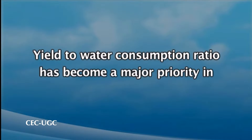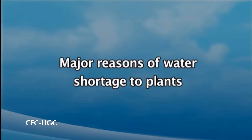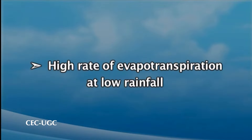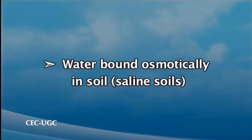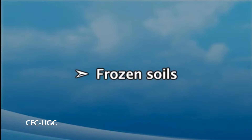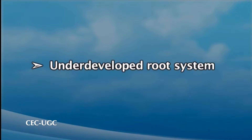By water use efficiency we mean the yield to water consumption ratio, which has become a major priority in agricultural research in contemporary times. The major reasons of water shortage to plants include high rate of evapotranspiration at low rainfall, water bound osmotically in soils especially in saline soils, frozen soils which do not allow water to be taken up by plants, and thin soil layers or underdeveloped root systems because of which plants cannot reach otherwise accessible water.